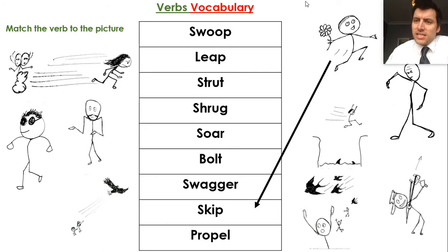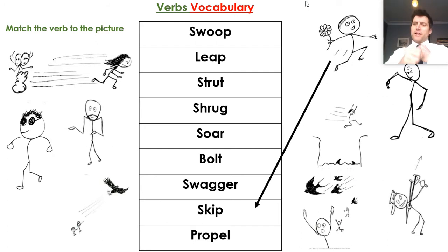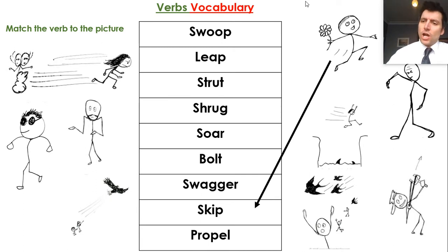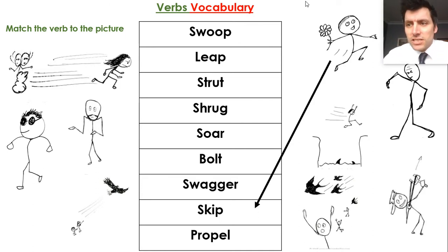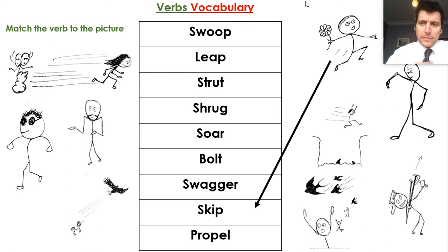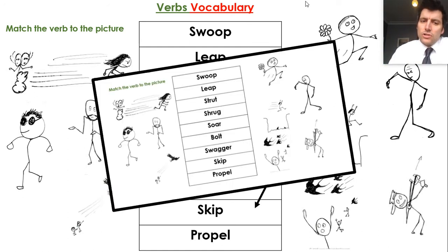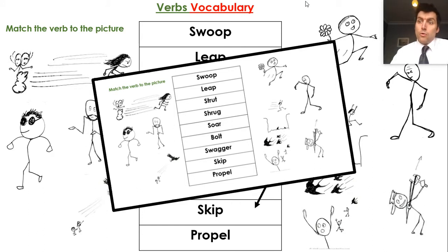For example, I can see that this picture shows skipping — the person's foreleg is raised, their toes are touching the floor, which indicates quite a light step. They're bouncing away, and I can see on their face that they're quite happy. What I'd like you to do is have a look on your sheet, match your verbs to your images, and pause the video whilst you do that.